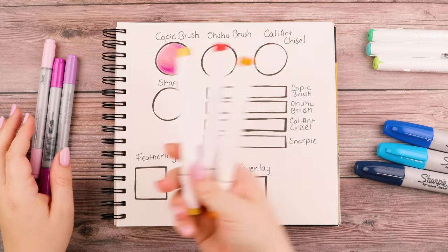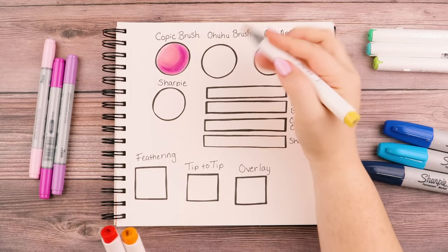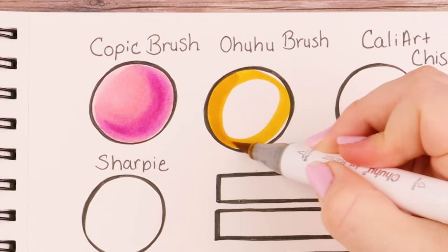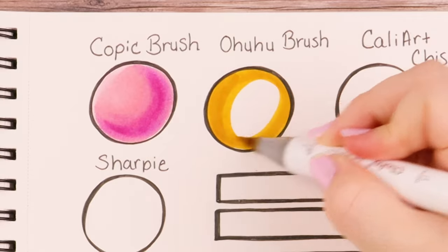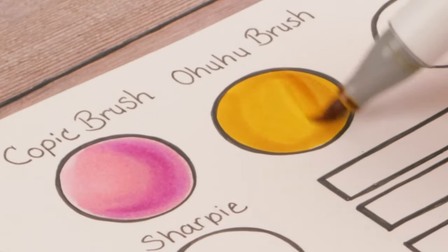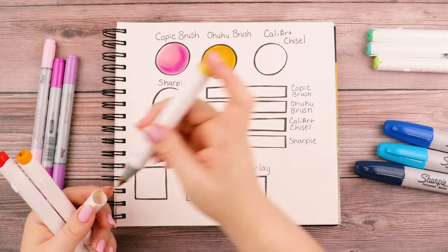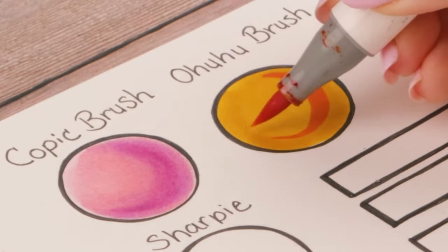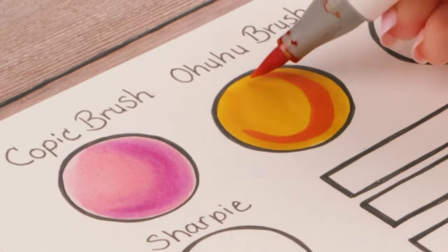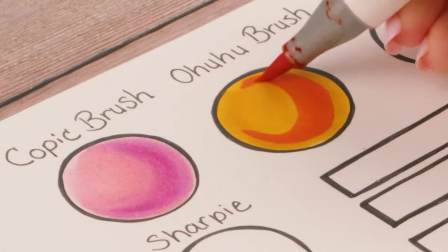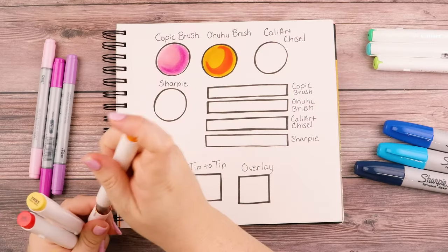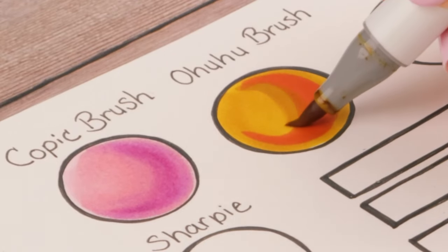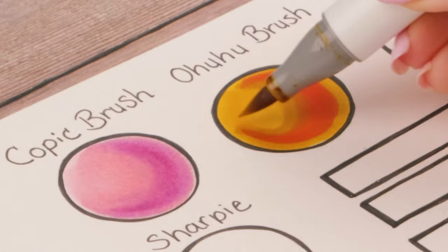Let's try out my Ohuhus. I'm going to start with yellow and color in the circle. The reason I'm doing all these brands is because some people believe that some brands are better at blending than others, and to an extent that is kind of true. For instance, I find Sharpie really hard to blend, but it's all about understanding how to blend. So I laid down that orange, and now I'm going back to my yellow, and I'm just going to smooth out the edges.